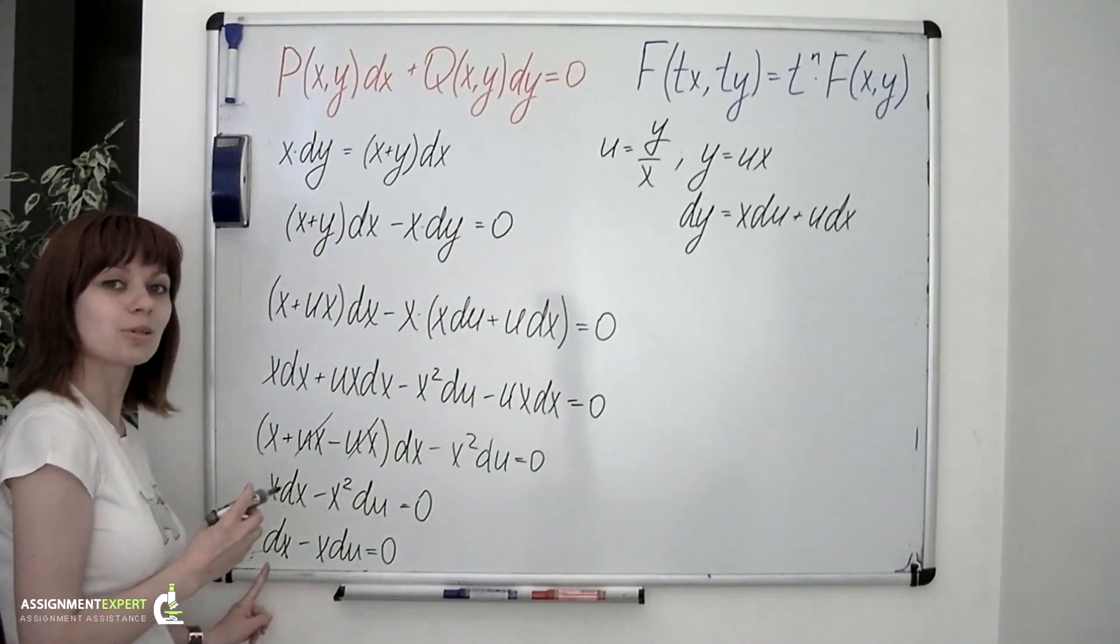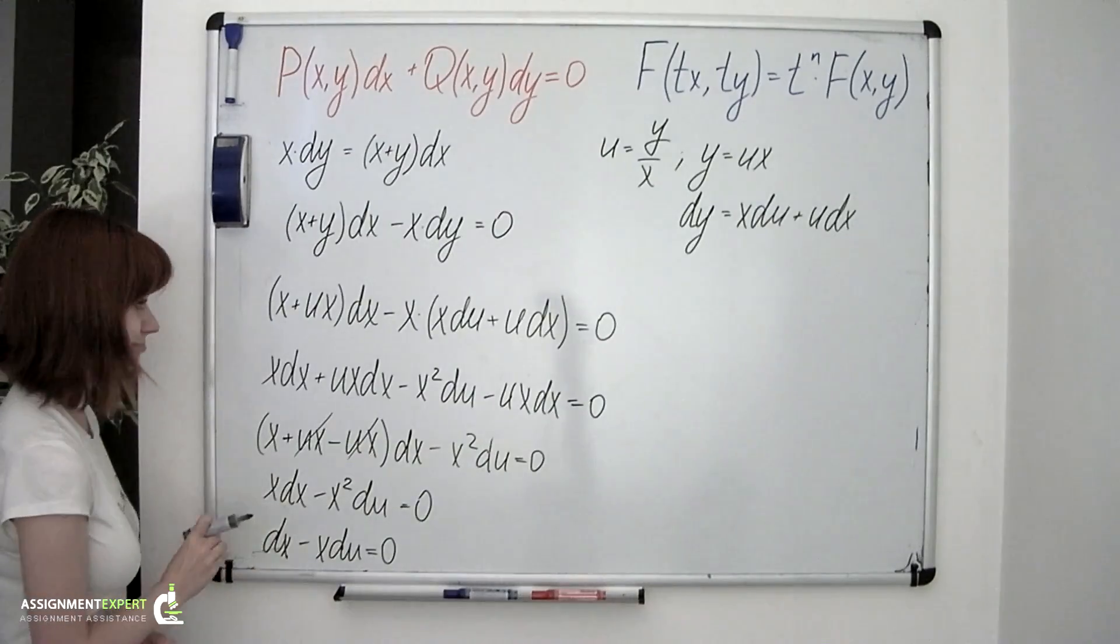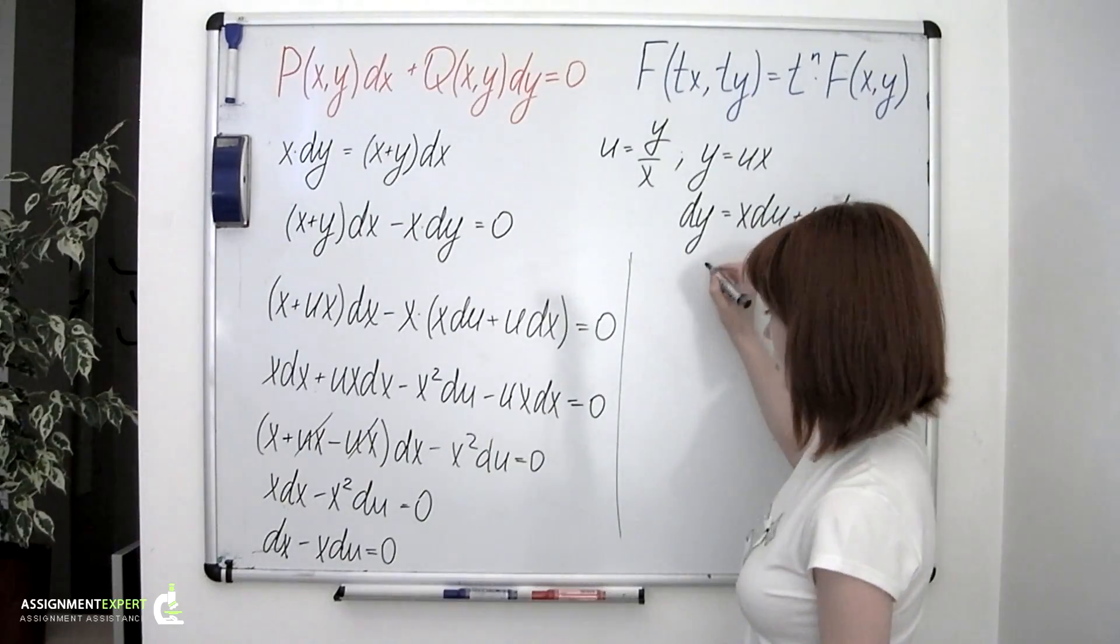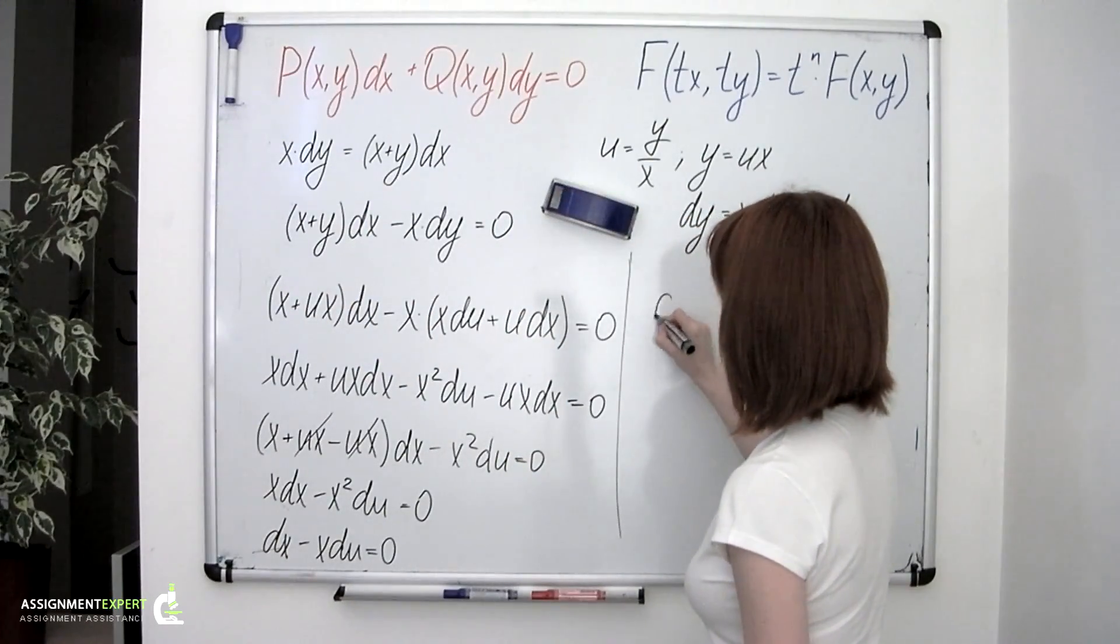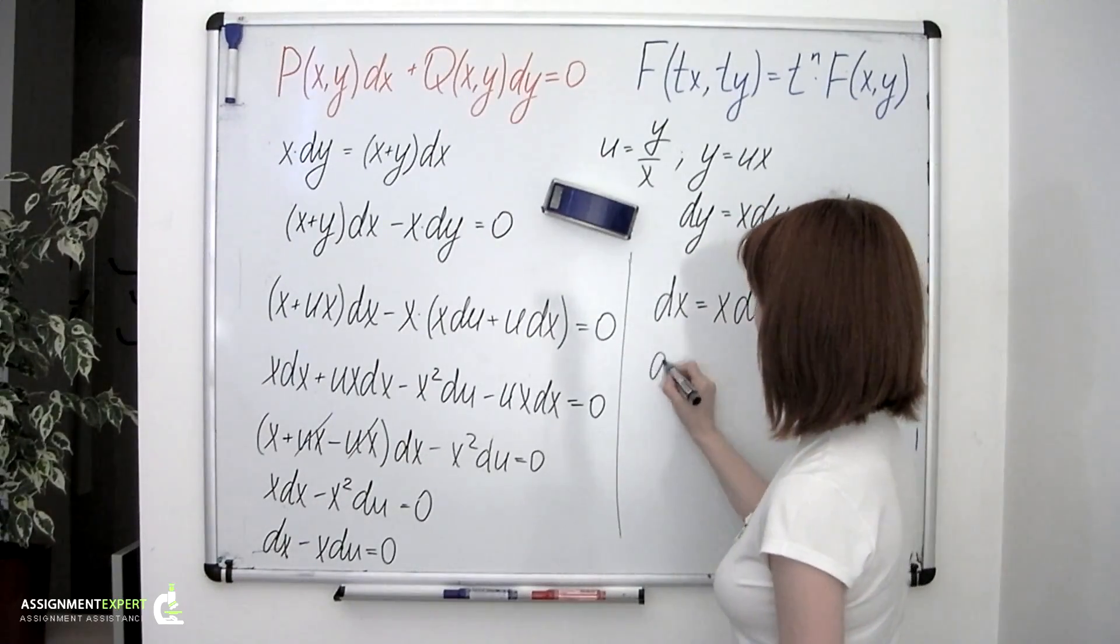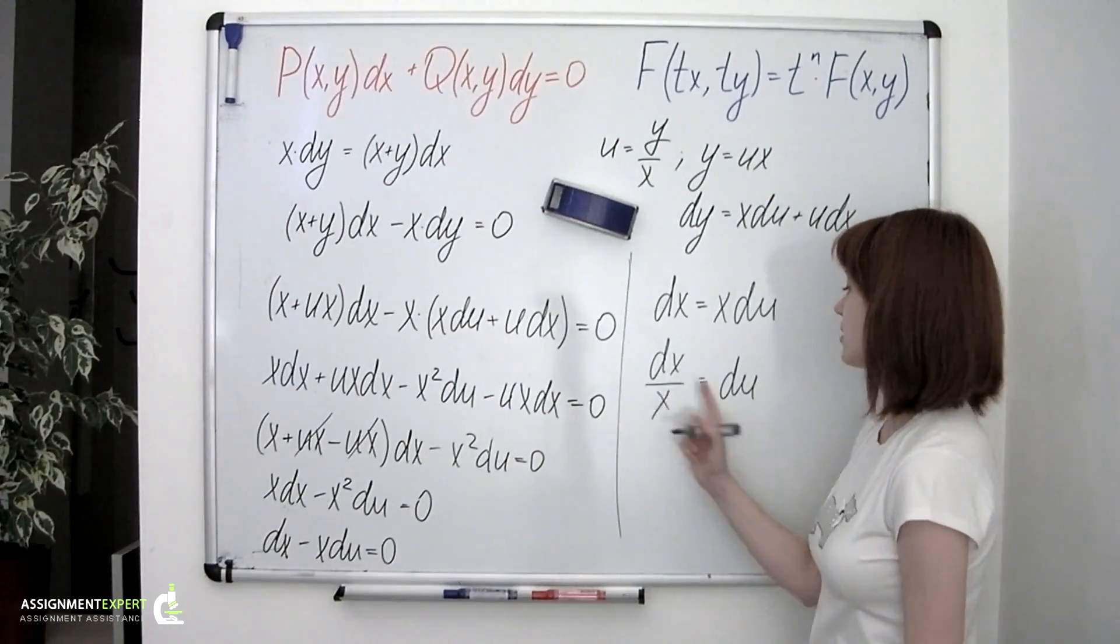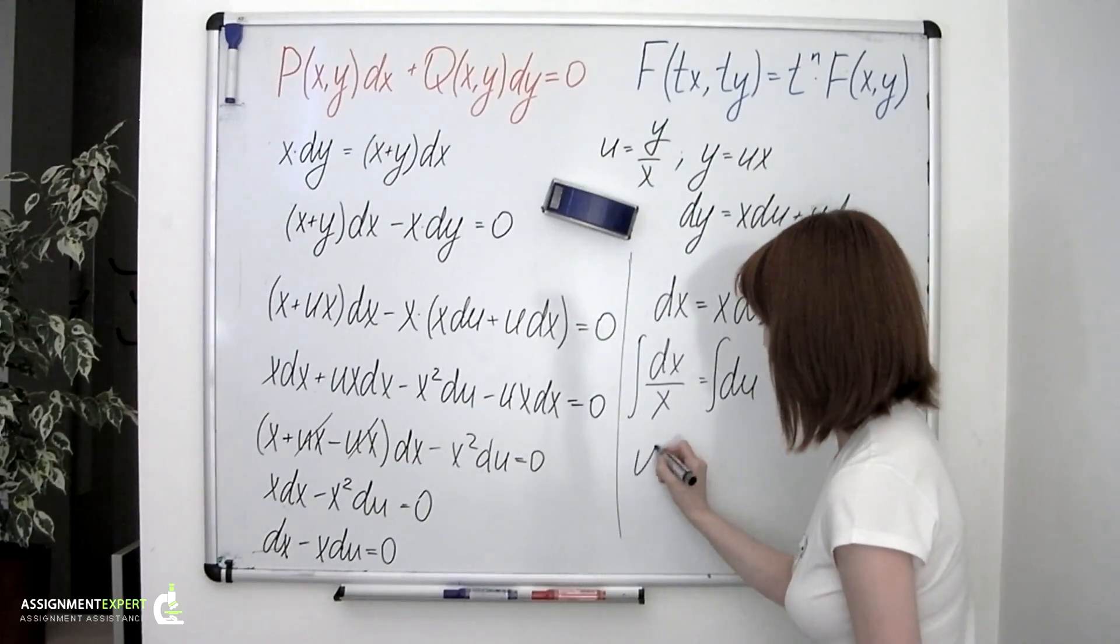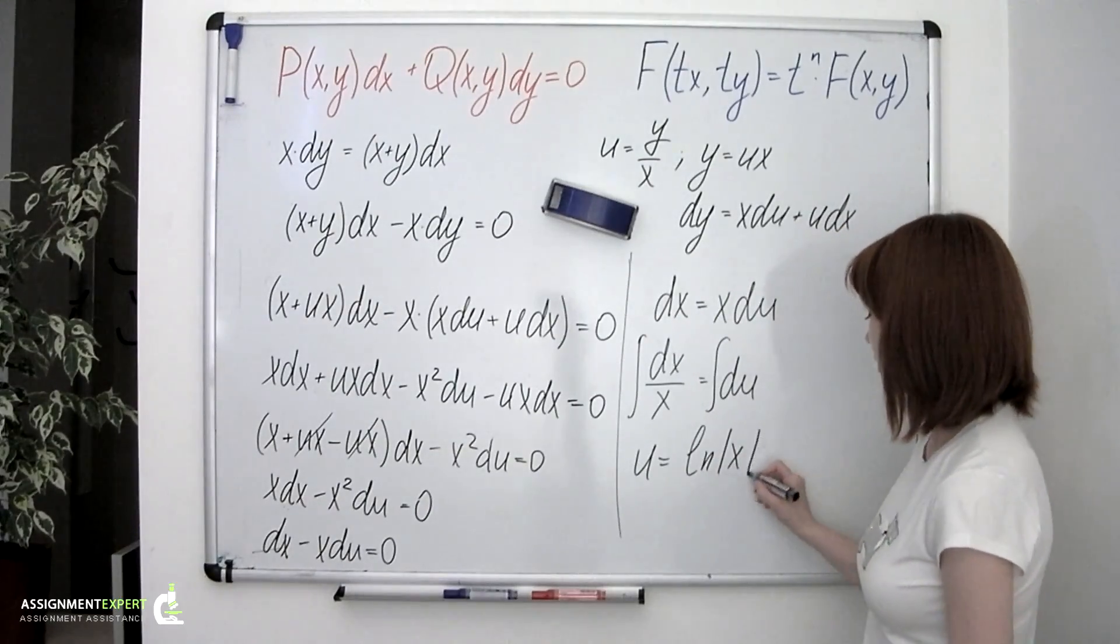Now this equation is an equation with separable variables. We can easily solve it. So we have dx equals x times du, dx over x equals du, and then we integrate the left and the right. We obtain u equals the natural logarithm of the absolute value of x plus the constant.